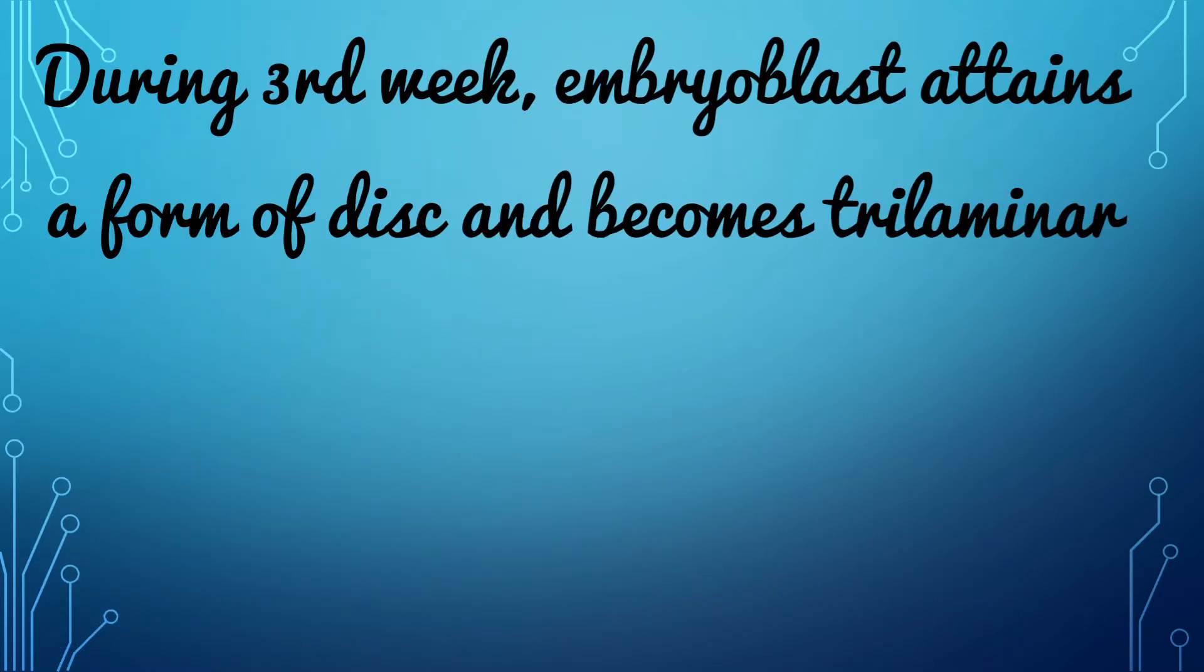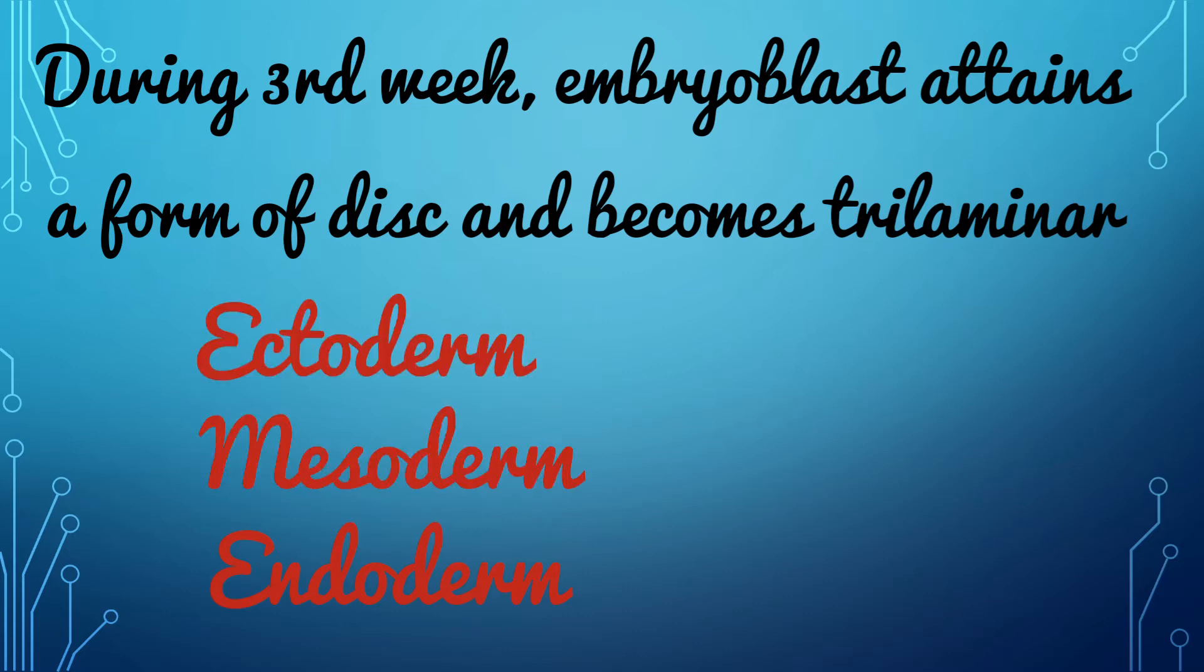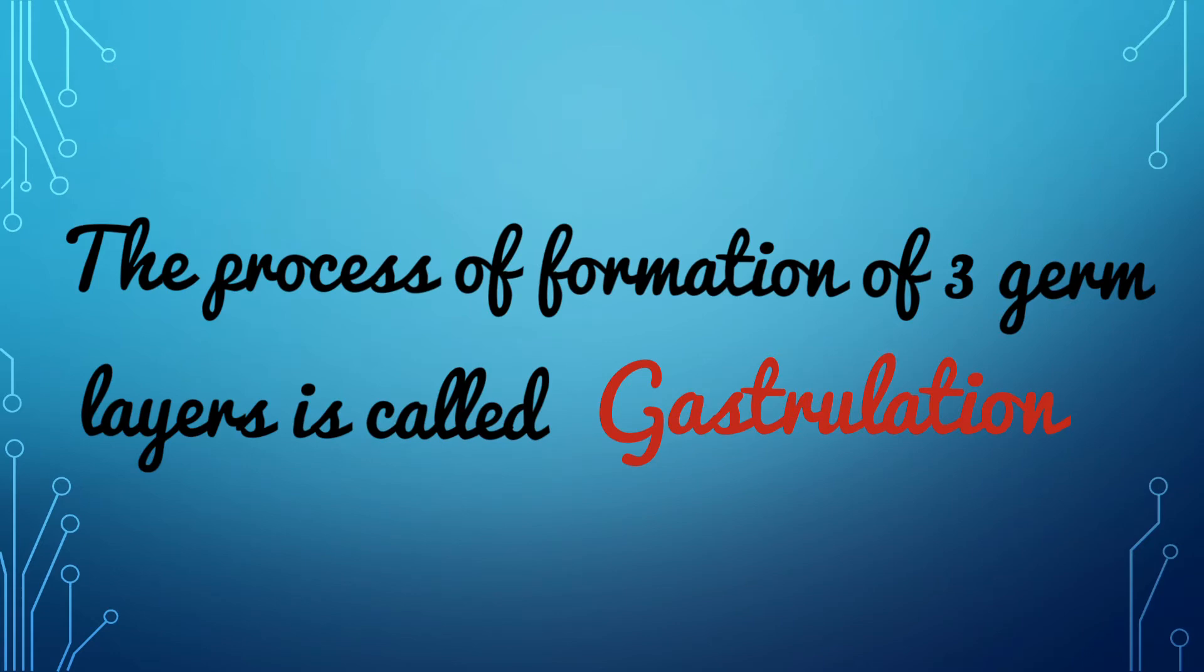During the third week the embryoblast attains a form of disc and it is trilaminar, that is it has three cell layers. From superficial to deep these are ectoderm, mesoderm, and endoderm. This process of formation of three germ layers is called gastrulation.